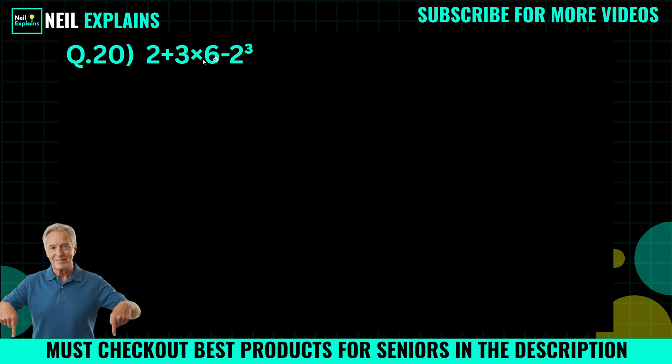Hello everyone and welcome back to Neil Explains. This is question number 20: 2 plus 3 times 6 minus 2 to the power 3.